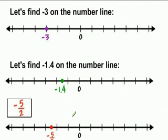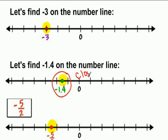Now when we're looking here at these three number lines, we have negative three, negative one point four, and negative five over two. When you are given these three numbers, which number is the largest? Well, negative one point four is the largest because it's the closest to zero. So the closer you are to zero, the bigger your number. So the order would be negative one point four, then negative five over two, then negative three — so negative three is the smallest number because it is the furthest away from zero.